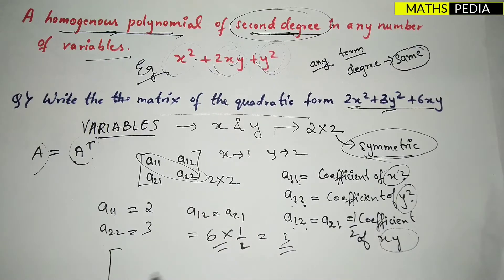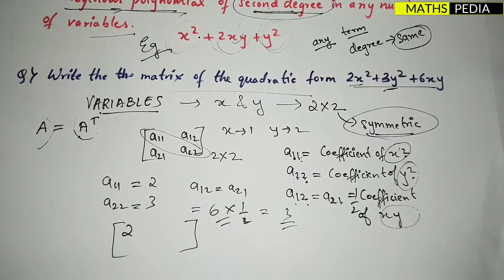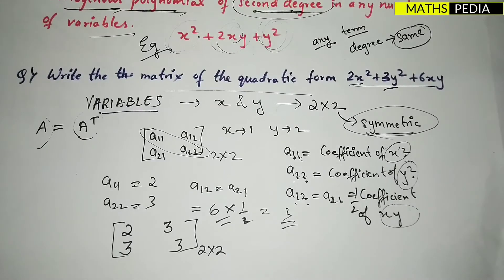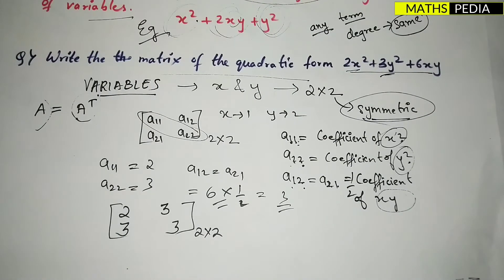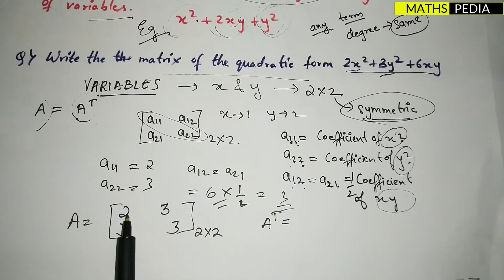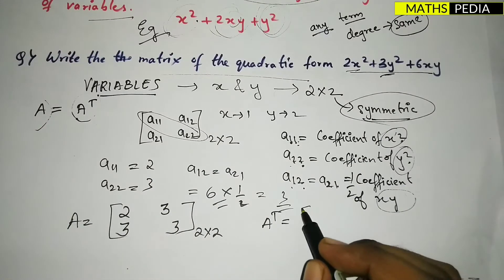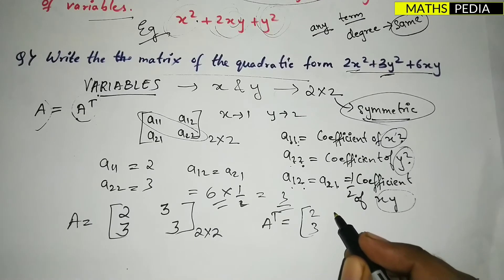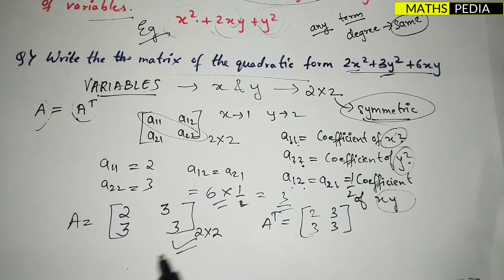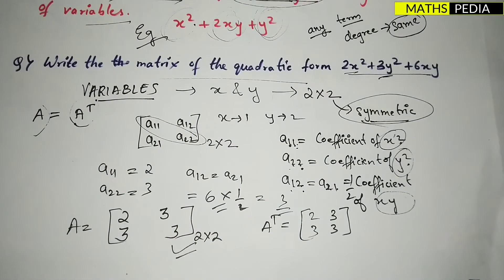So the matrix is: [2, 3; 3, 3]. We have a 2×2 matrix. Now, to verify it is symmetric, find the transpose by interchanging rows and columns: the first row [2, 3] becomes the first column, and the second row [3, 3] becomes the second column. The result is identical to the original matrix, confirming A = A-transpose — it is symmetric.